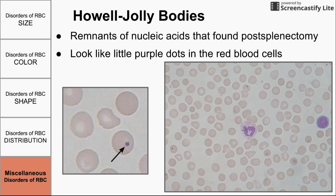One miscellaneous condition is Howell-Jolly bodies. On the blood smear, they look like small purple dots inside the red blood cells — usually one per red blood cell. You start seeing these after the spleen is removed or if the spleen is not functioning properly, such as after splenic infarction. These purple dots are actually remnants of nucleic acids that normally would have been collected by the spleen and reintegrated into the body, but instead were released and formed these insoluble bodies inside the red blood cells.